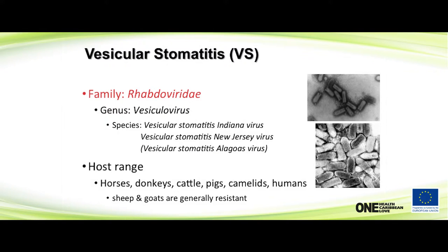Vesicular stomatitis infects many different species: horses, donkeys, cattle, pigs, camelids, humans, and others. But it's mostly seen in horses and cattle. You have to remember that it also affects humans as well.